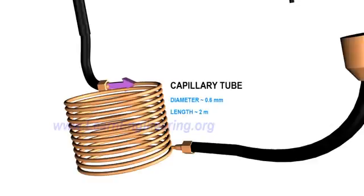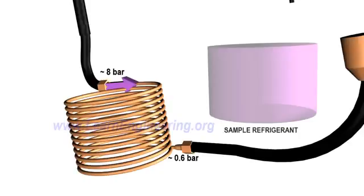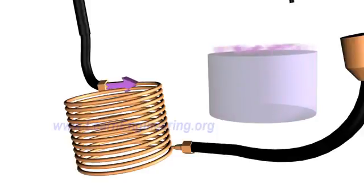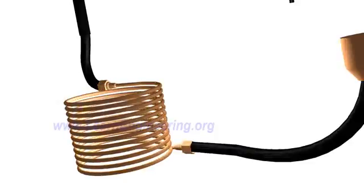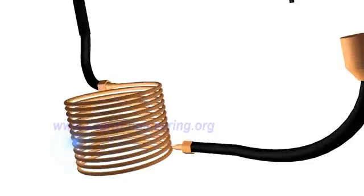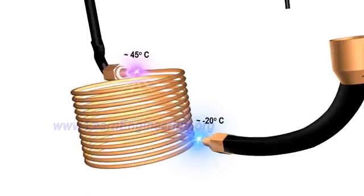The throttling device is an obstruction to the flow which causes tremendous pressure drop. Due to drop in pressure, the boiling point of refrigerant comes down and it starts evaporating. Heat required for evaporation comes from within the refrigerant, so its temperature drops. If you check temperature across the throttling device, you can notice this drop.